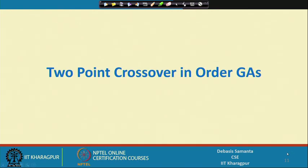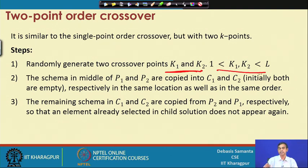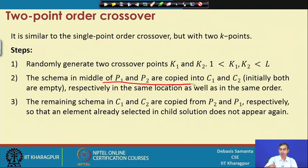Next we discuss the two-point order crossover technique, which is a more diversified technique. The difference is that instead of one k point, we consider two k points, k1 and k2, both between 1 and L. Once these two k values are decided, the middle part of P1 is copied into the middle of C1, and the middle part of P2 into C2.